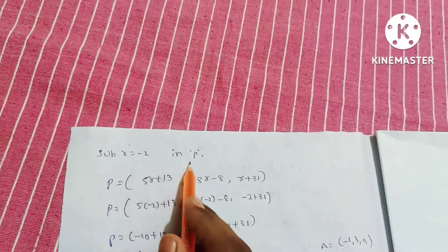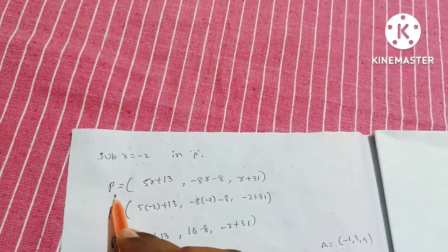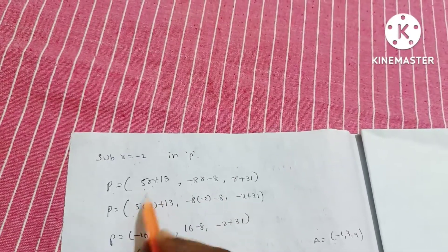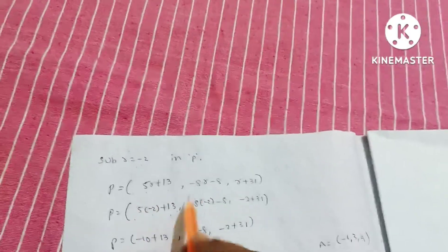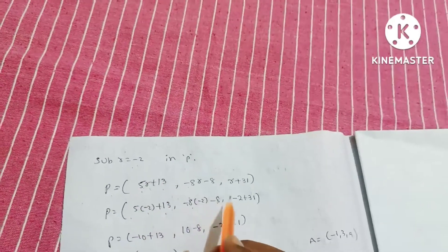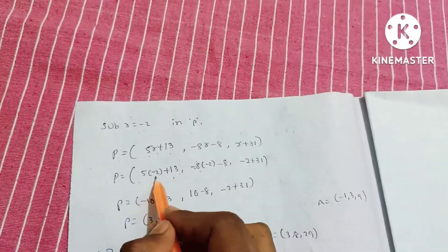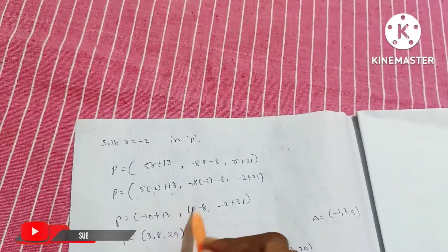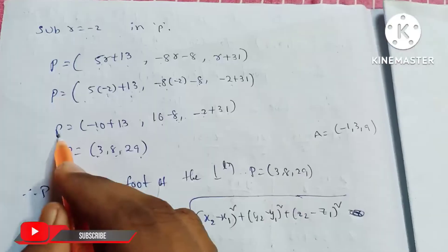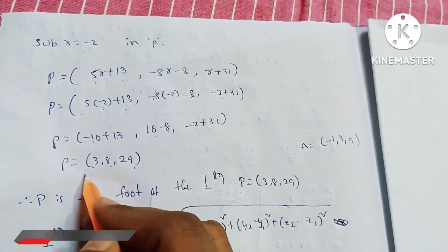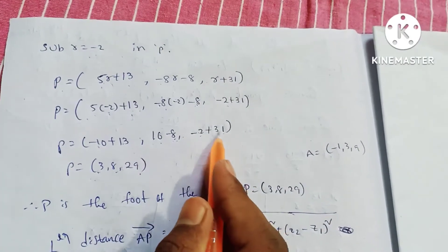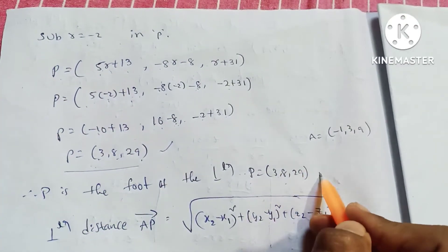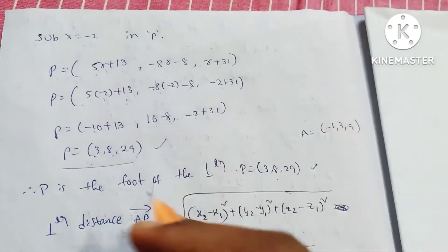Substituting R equals minus 2 into P: x equals 5 times (minus 2) plus 13 equals 3; y equals minus 8 times (minus 2) minus 8 equals 16 minus 8 equals 8; z equals (minus 2) plus 31 equals 29. Therefore the foot of the perpendicular P equals (3, 8, 29).